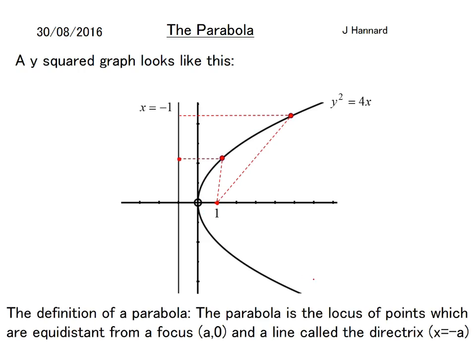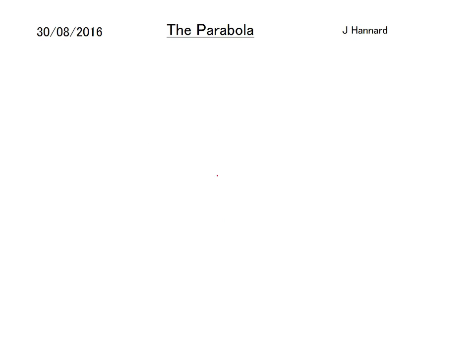So there we go, the definition of a parabola. The parabola is the locus of points which are equidistant from a focus, (a, 0) and a line called the directrix, x equals minus a. So as you can see this fits the rule because that is 1 and that is minus 1 so our a here is 1. So there you go, there's your generic parabola and we're just going to call it x equals minus a and a and we're just going to call that point (x, y).